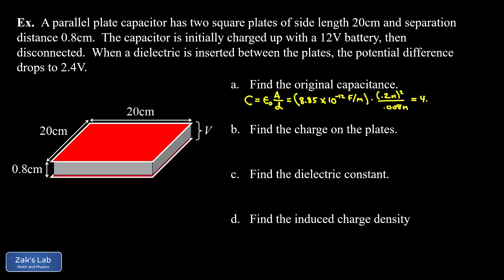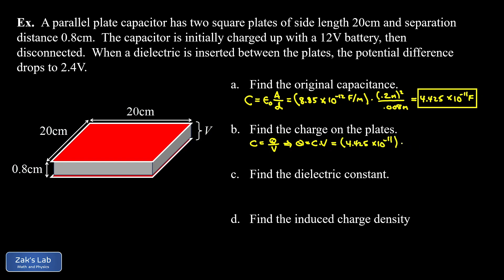Running the numbers gives us 4.425 times 10^−11 farads. Next, we find the charge on the plates. Since capacitance is charge per volt, charge equals C times V. Substituting the capacitance we just found and the initial voltage of 12 volts gives us 5.31 times 10^−10 coulombs.